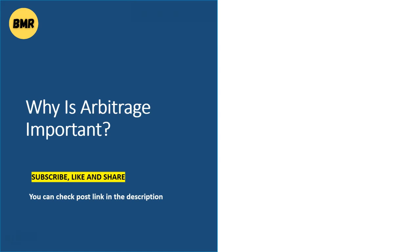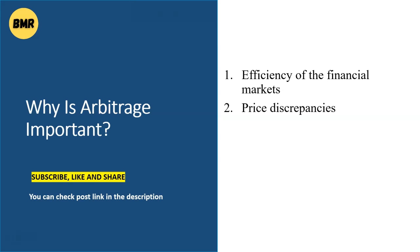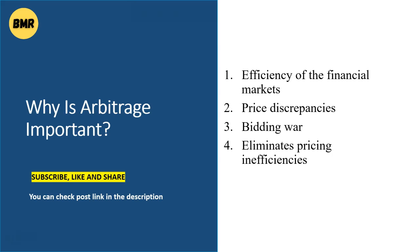Why is arbitrage important? Arbitrage traders improve the efficiency of the financial market as a result of their profit-making. The price discrepancies between comparable or identical assets narrow as people buy and sell. Higher-priced assets are sold while low-priced assets are pushed up in the bidding war. Arbitrage eliminates pricing inefficiencies and increases market liquidity in this way.